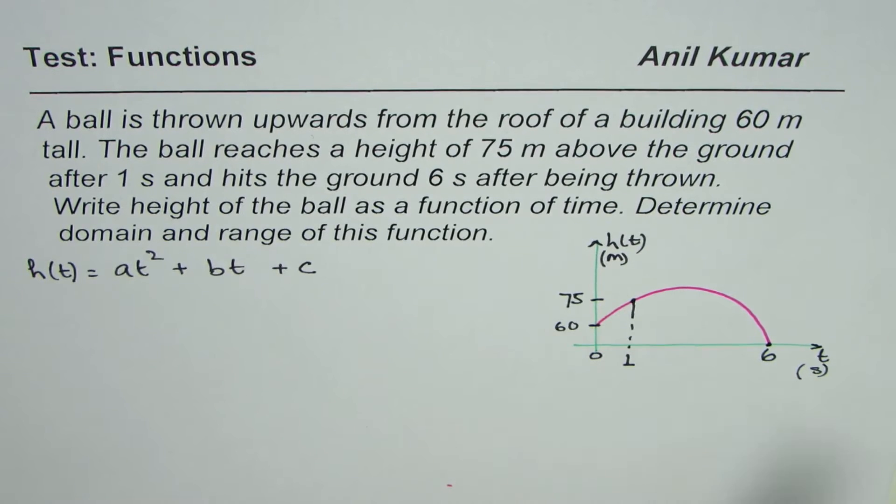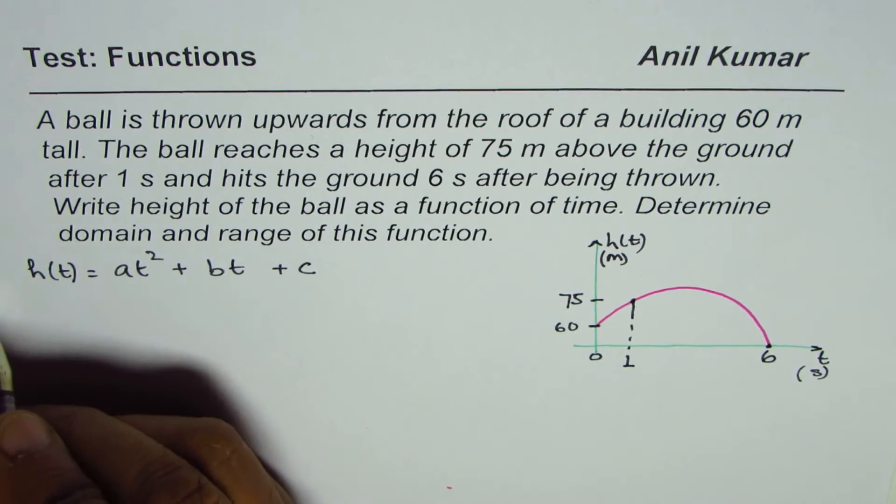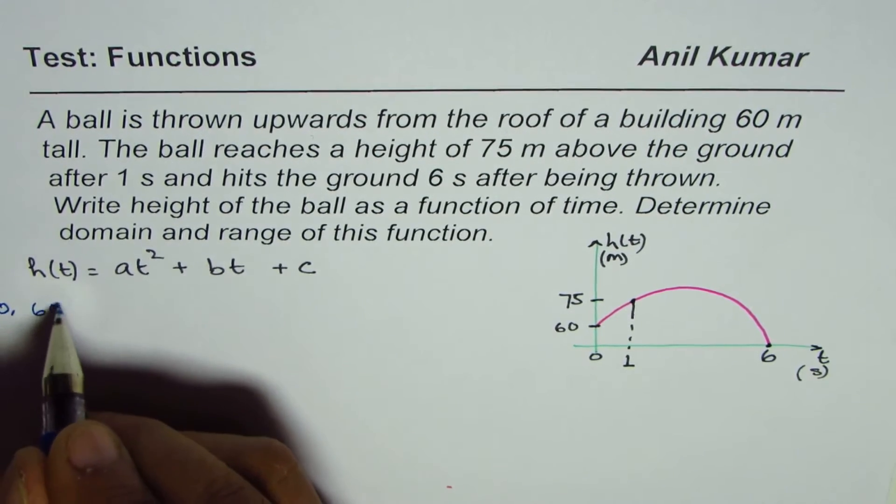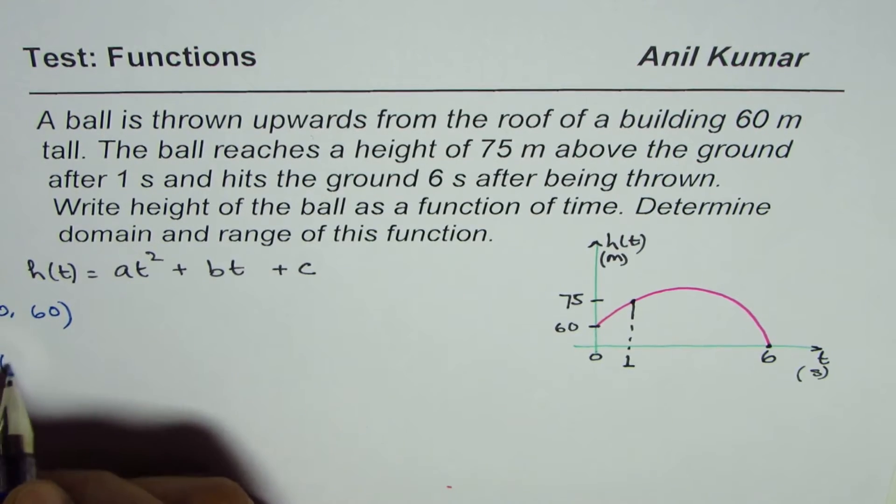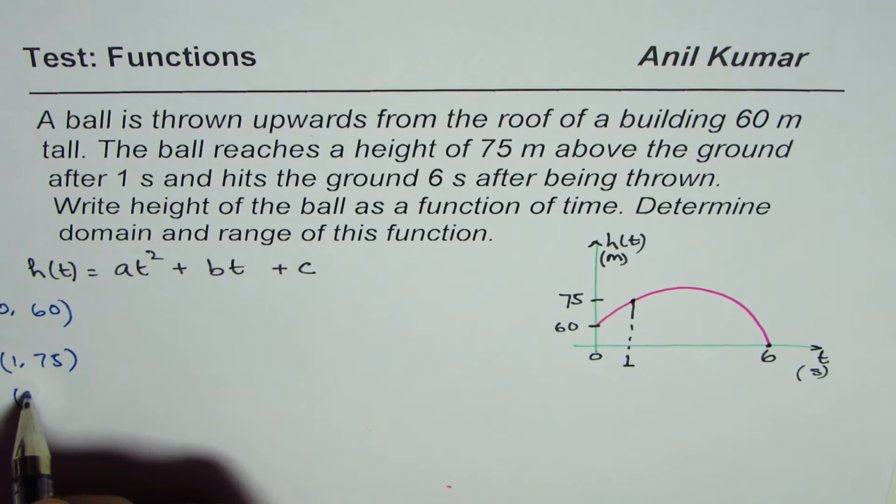Points given to us are: at t equals to zero the point is 60, and at t equals to one the value is 75, that is the height, and for t equals to six the height is zero.